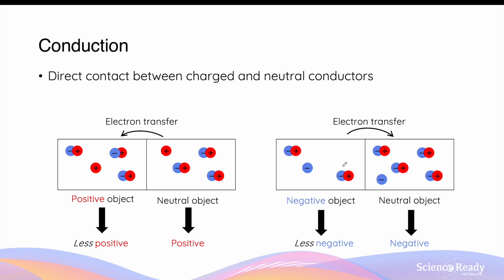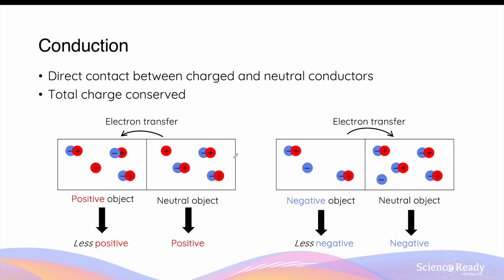In essence, conduction is when electron transfer occurs between a charged object and a neutral object. As a result, the neutral object always acquires the same type of charge as the charged object — in the first example the neutral object became positive, and in the second it became negative. Conduction also obeys conservation of charge: regardless of the direction of electron transfer, the total charge in both objects remains the same, since the total number of protons and electrons is unchanged.